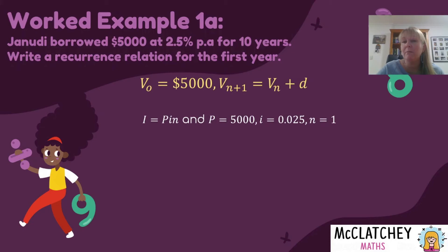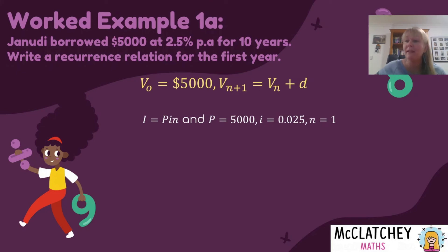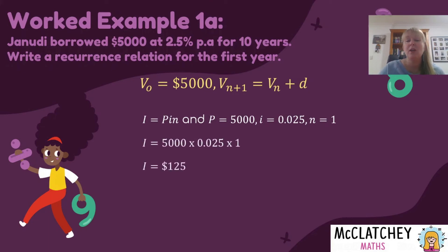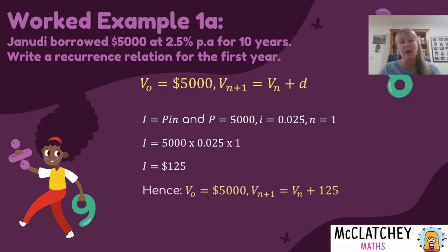So P is our principal five thousand, multiplied by 0.025 — our interest rate as a decimal — and n is going to be equal to one. Now you might be asking: hang on, it's a 10-year loan. Well, we don't want to work out how much interest is charged over 10 full years — we want to know how much interest is added in the first year, which will be the same amount added in the second year, the third year, and so on. So to work out for one year, our n value equals one; otherwise we find 10 years worth of interest, not one. That's our common difference: D equals 125. So our recurrence relation is V0 equals 5,000 and Vn plus one equals Vn plus 125. Each year, $125 interest gets added.